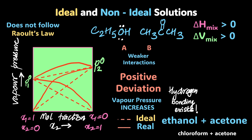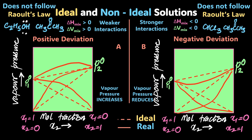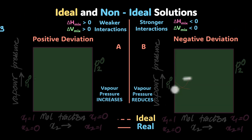To summarize both: positive deviation from ideality occurs when interactions are weaker than expected, so the solution boils at lower temperatures. Negative deviation — like CHCl₃ and acetone — occurs when interactions are stronger, vapor pressure reduces, and the boiling point increases. Both types do not follow Raoult's law.